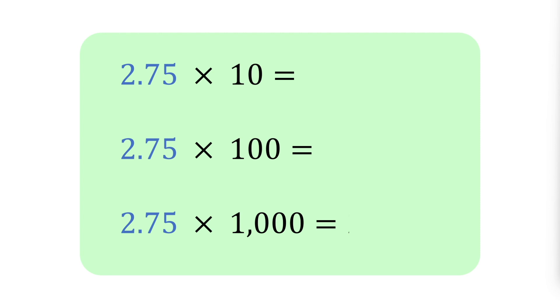When you multiply 2.75 by 10, move the decimal point one place to the right because 10 has one zero. This gives you 27.5.